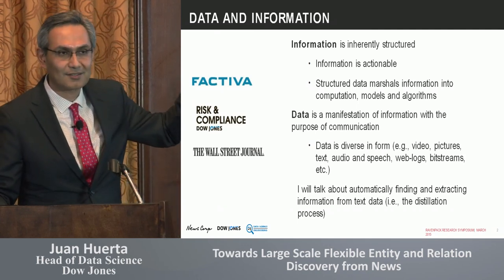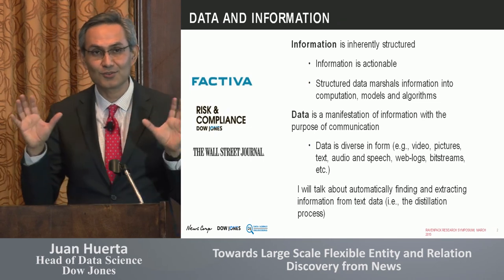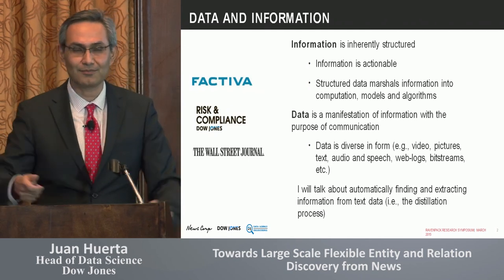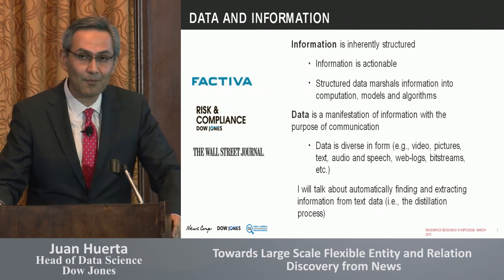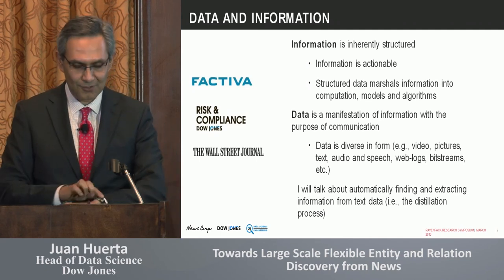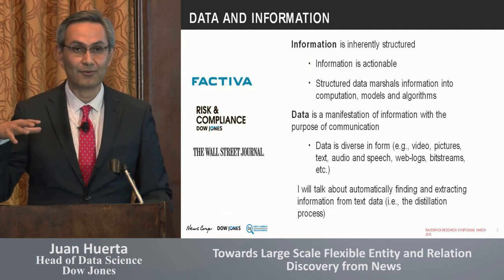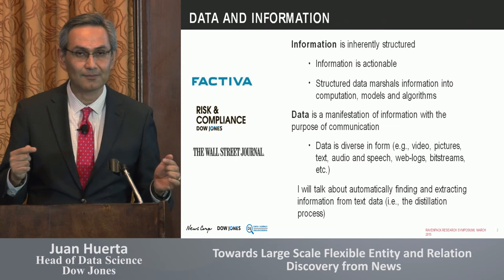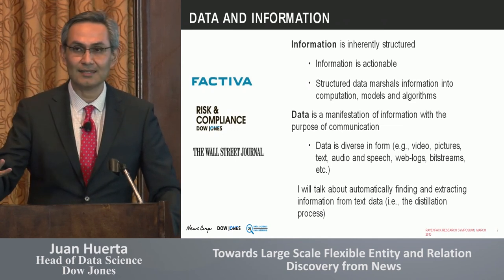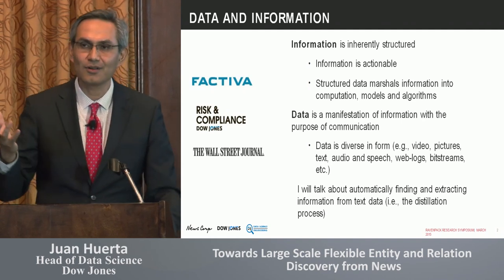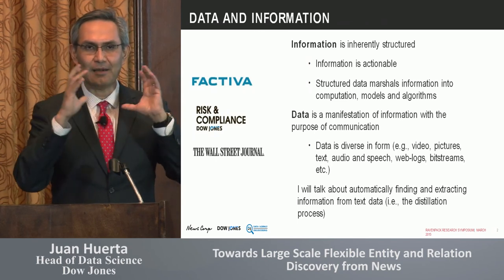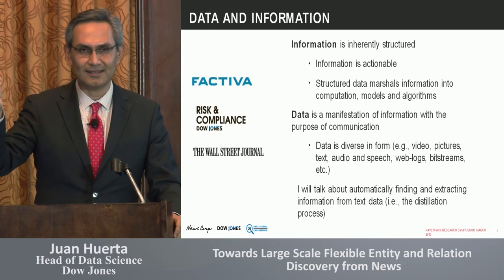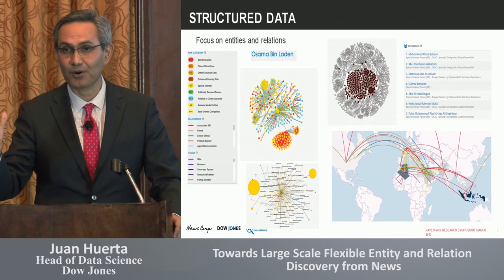The products that Dow Jones produces can also be understood in this dichotomy. We have Factiva and the Wall Street Journal — those are unstructured data sets; people get their newspaper and read it in the morning. Risk and Compliance, which some of you might be familiar with, is a structured data set containing names of people who have a heightened profile of risk. These entities, which could be corporations, are located around the world and some are interconnected. During this talk I'll give you a guided tour of what it entails to go from unstructured data to these distilled, structured data sets.